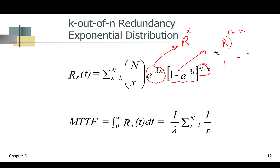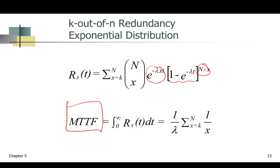That gives us the reliability for the system. The mean time to failure is given by 1 over lambda times the sum of 1 over x, where x goes from k to n.